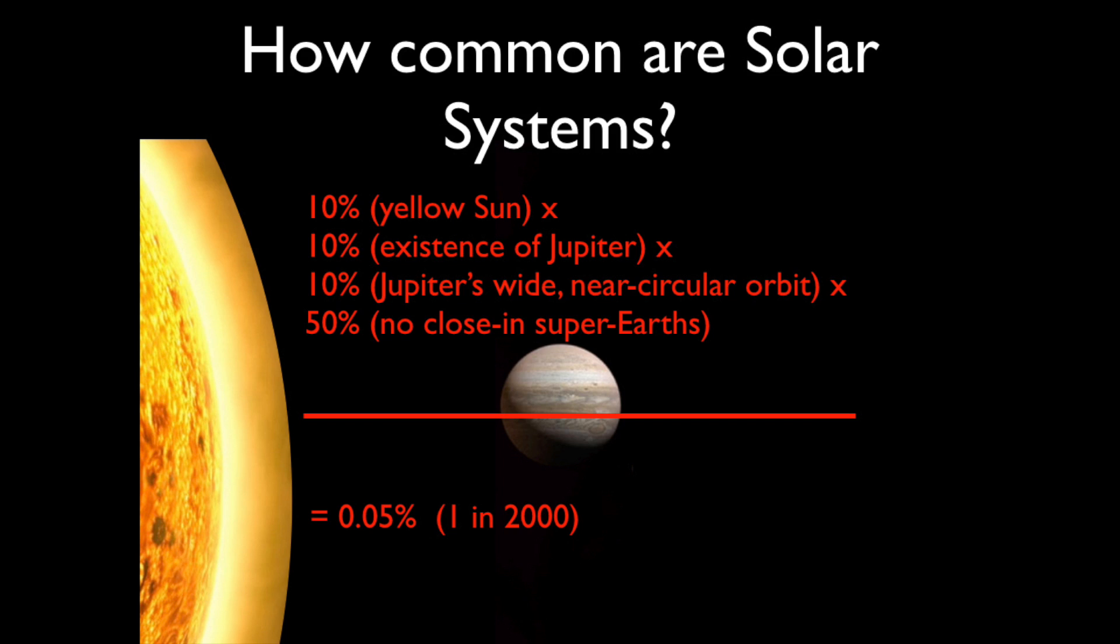So putting all these probabilities together, we can ask the question, how common are solar systems? And so based on what we know right now, there's a 1 in 10 chance of having a yellow Sun like we do. There's a 1 in 10 chance of having a Jupiter at all.